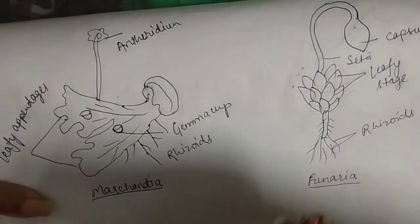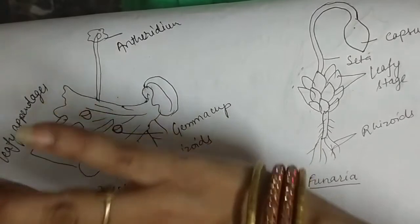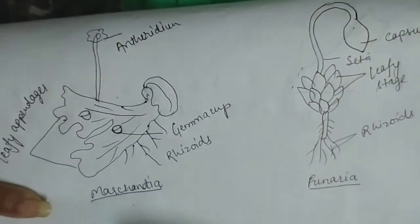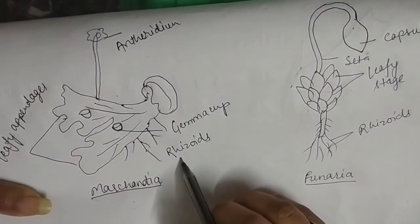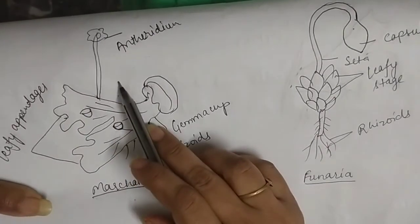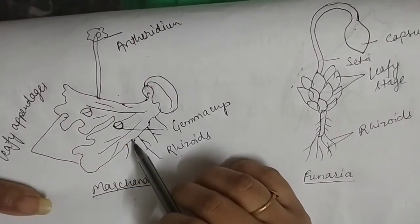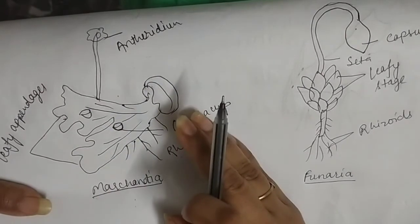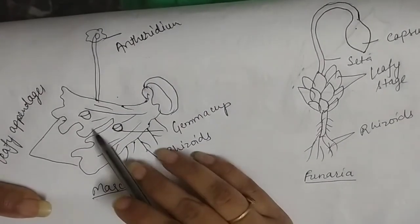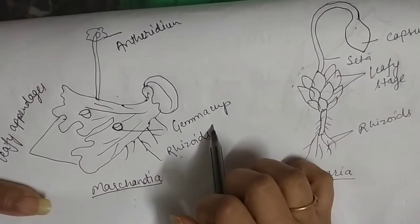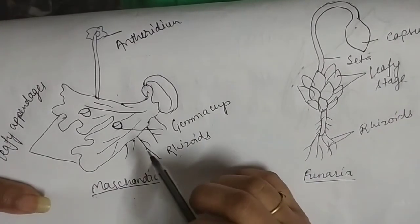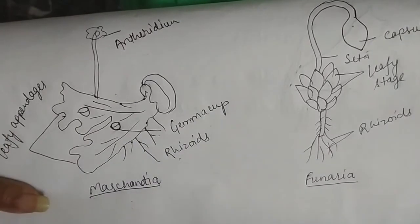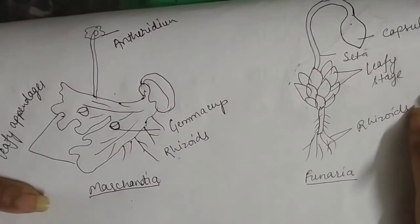In this diagram of Marchantia, it is unisexual and dioecious — the male and female thalli are different. On the surface you can find gemmae cups. When the gemmae cups mature, the gemmae are dispersed and become a new plant.